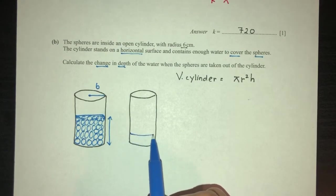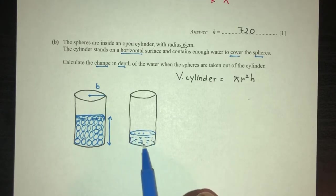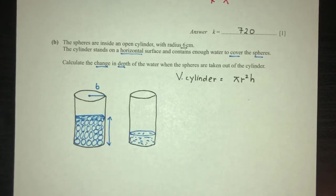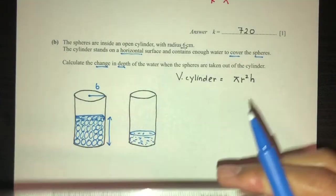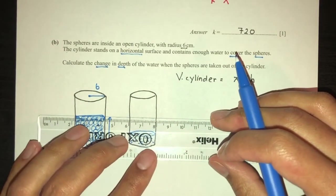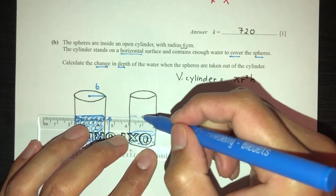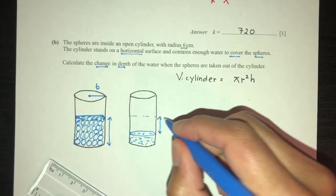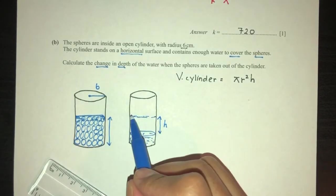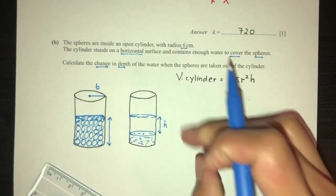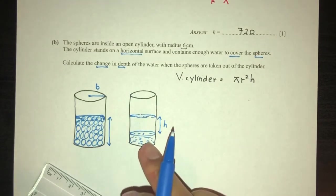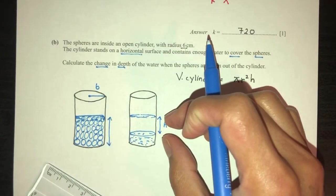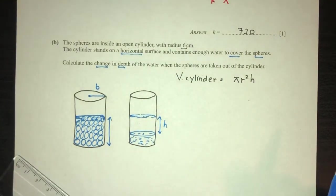That is the water inside right now. That's the water. But now, we want to find the change in that height. We want to find this height. That was the initial level. When we took out the spheres, the water dropped to this point. We have to find this change in height.